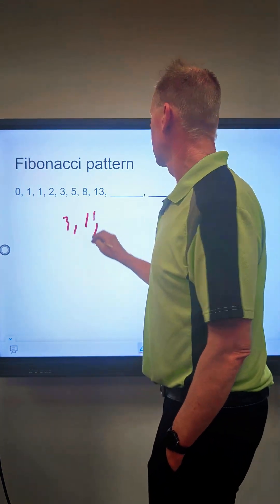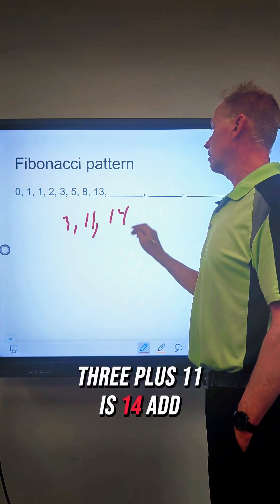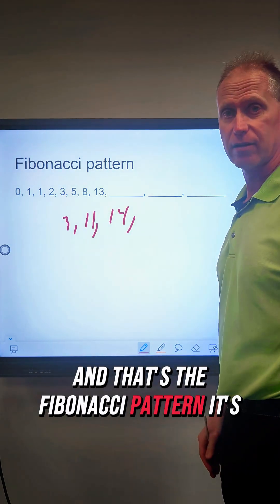Let's do 3 and 11. 3 plus 11 is 14. Add those up. If you keep going, that's the Fibonacci pattern. It's a great pattern.